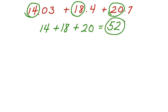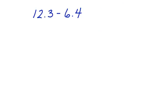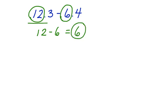Now, you can use front-end estimation to find differences as well. Here we have 12.3 minus 6.4. Again, let's take the front end. And in this case, the front end is everything to the left of the decimal point. I've got 12 here, and I've got 6 here. So I've got 12 minus 6, which is equal to 6. So we could say that an estimate for this subtraction problem is 6.